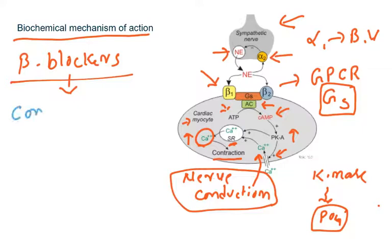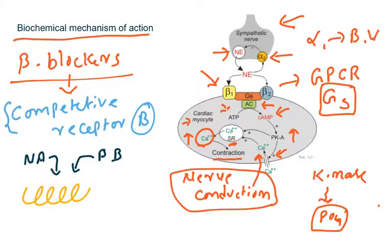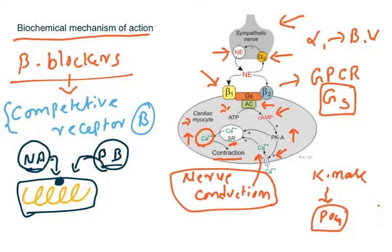Beta blockers are competitive receptor blockers. Imagine a beta receptor — the natural ligand noradrenaline can bind to it, and so can the beta blocker drug. There is competition between the natural ligand and the beta blocker drug to occupy the receptor. When the natural ligand concentration is higher it binds; when the beta blocker concentration is higher it replaces noradrenaline. This is why they are called competitive receptor antagonists.